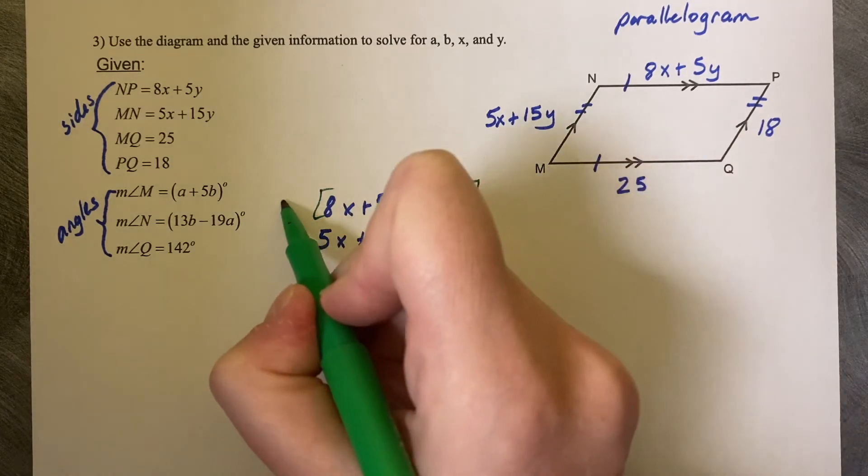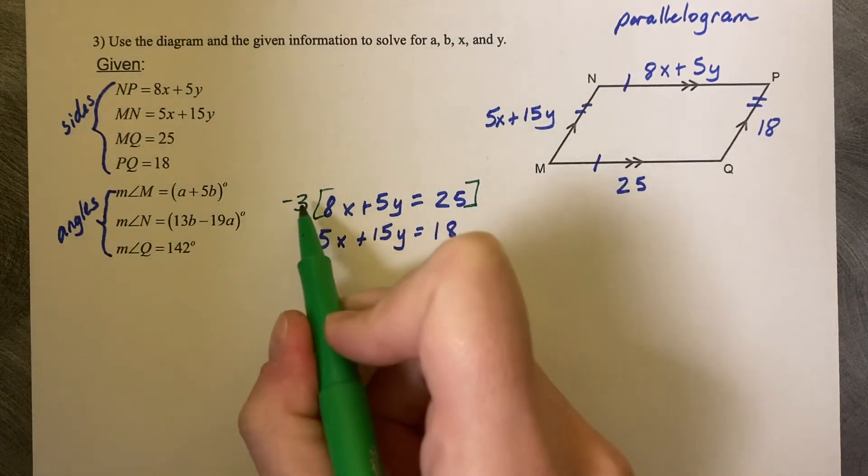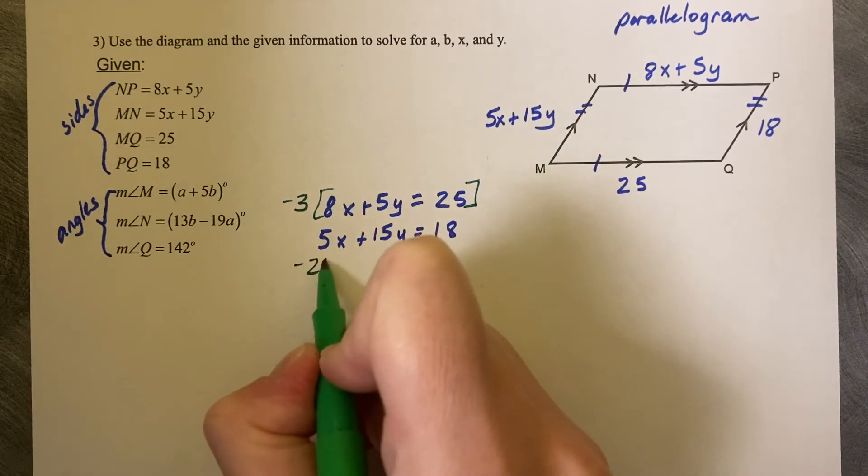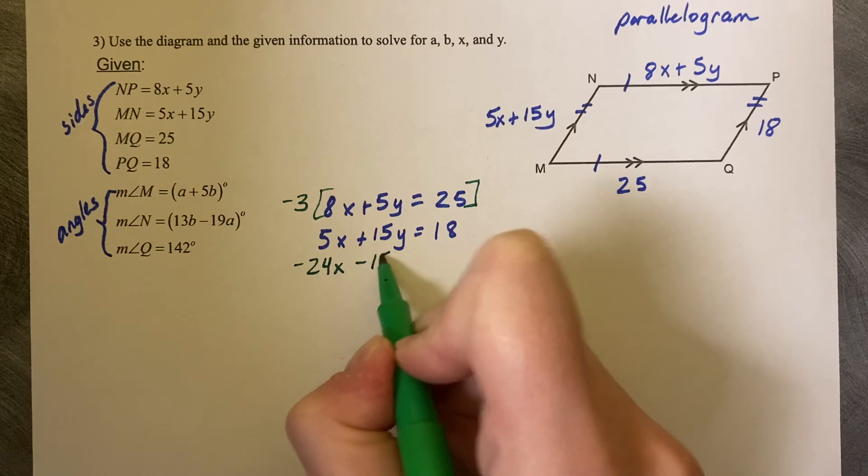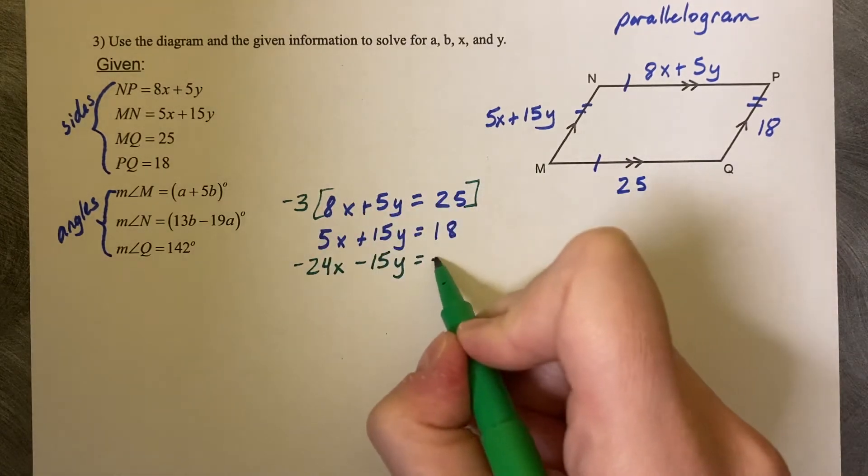So 5 times negative 3 makes negative 15. So then negative 3 times 8 gives us negative 24X minus 15Y and then negative 3 times 25 is negative 75.